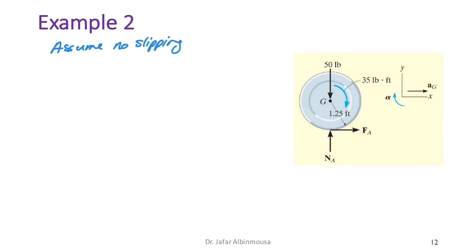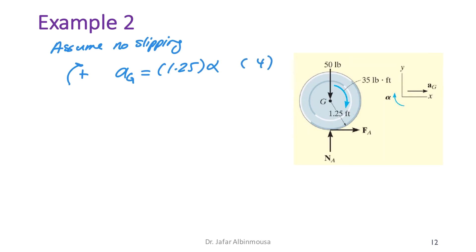Assuming no slipping and taking clockwise as positive: a_G = α·r = 1.25·α. This is equation four.